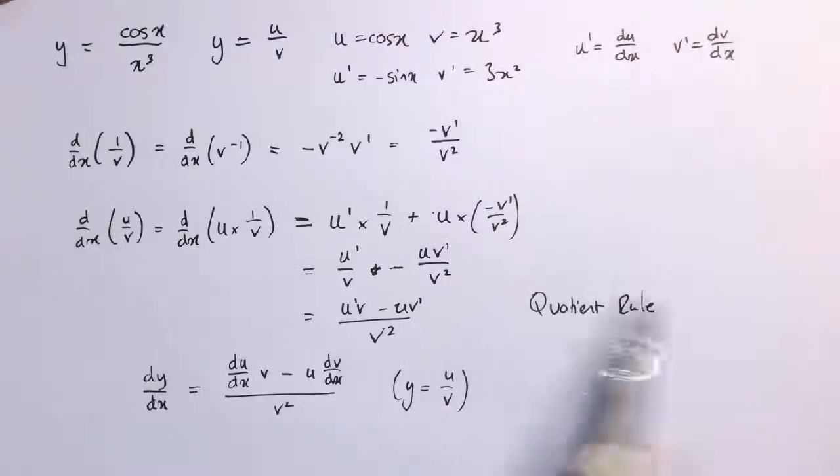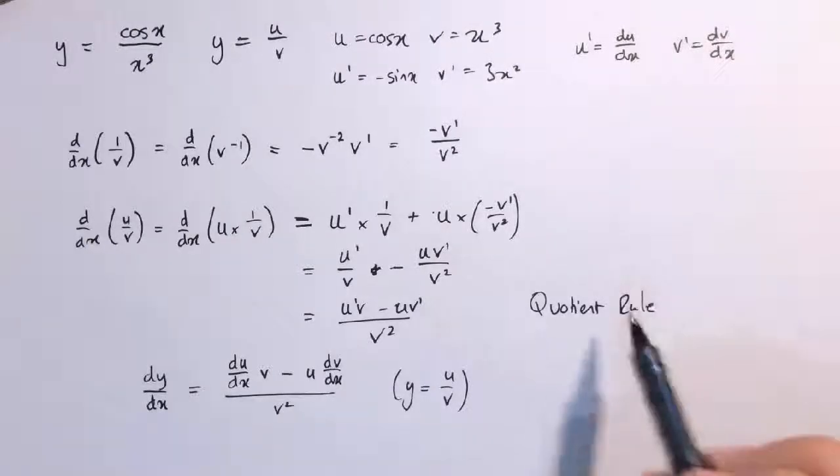If you wanted to prove this directly without even using the product rule, you could use the same argument from that proof and look at differentiating u plus 1 over v all squared. Have a look back to that video if you're not sure what I'm talking about. But you could do it directly just using the chain rule.